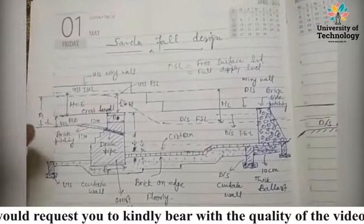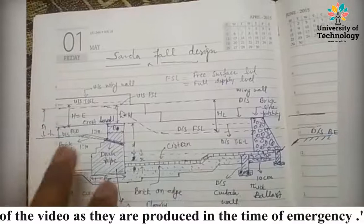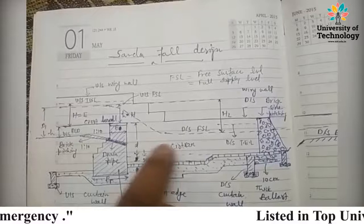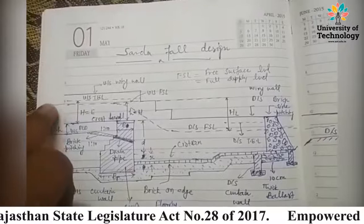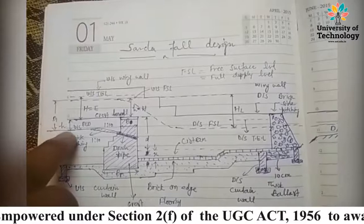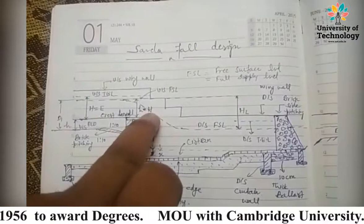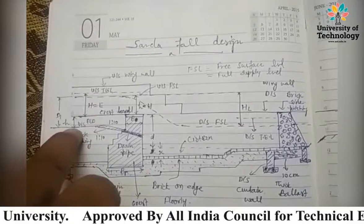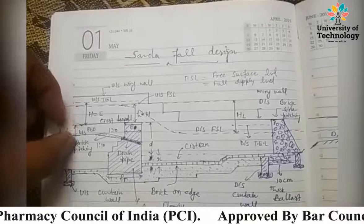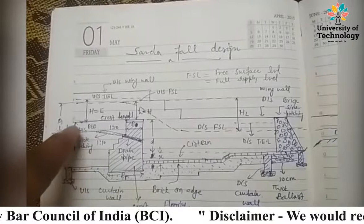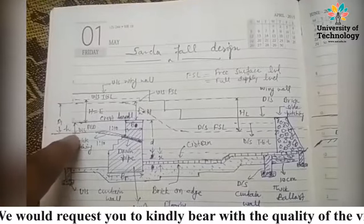The direction of water flow is from left to right — the canal is flowing in this direction. Capital D1 is the distance from the upstream bed level to the full supply level of the upstream side, represented by capital D1. Small h here represents the depth from the upstream side to the crest level.